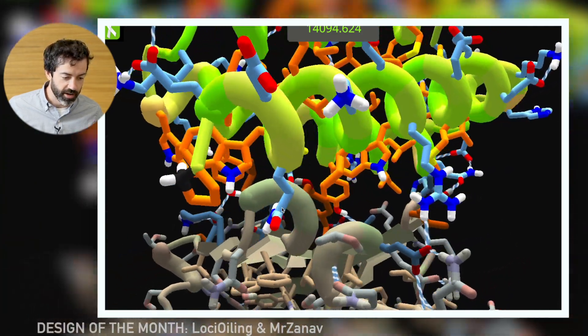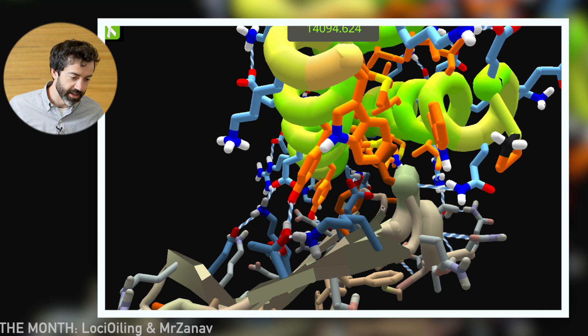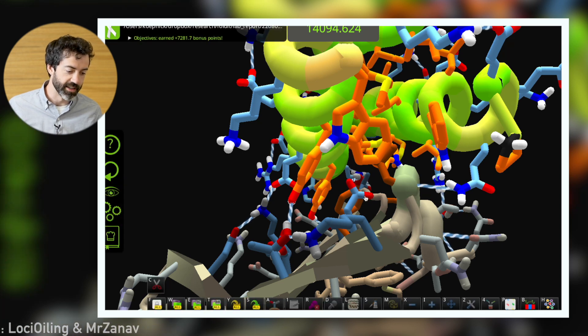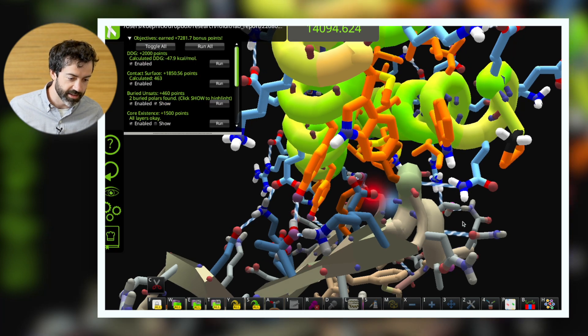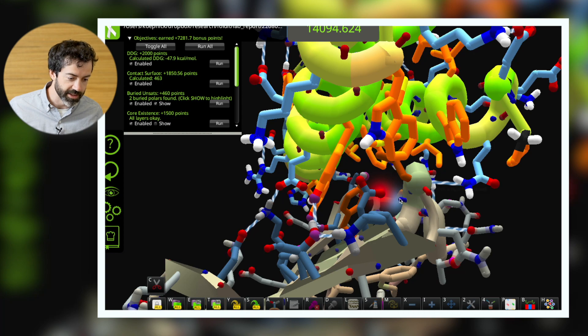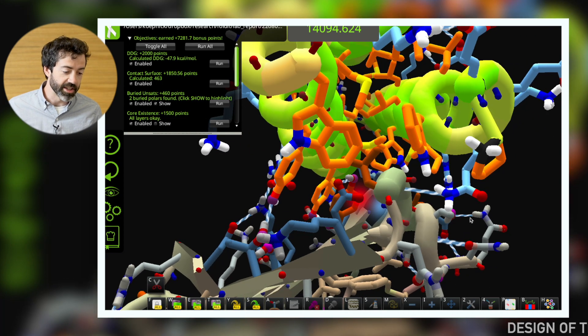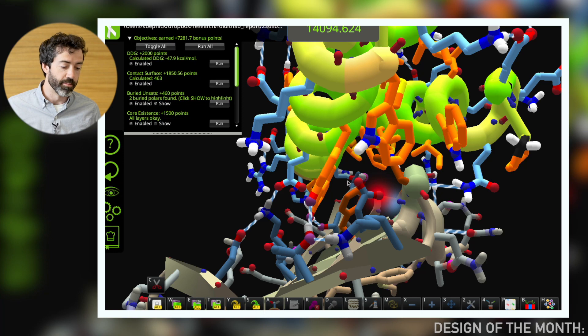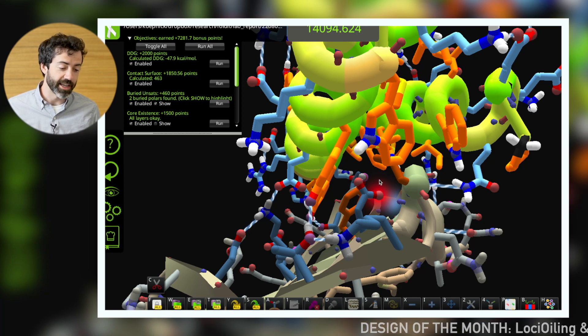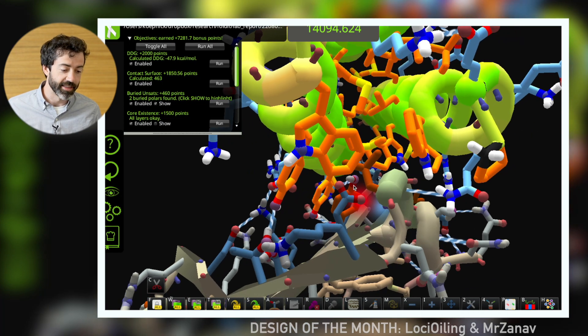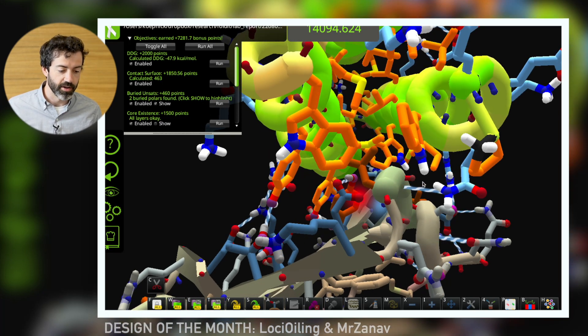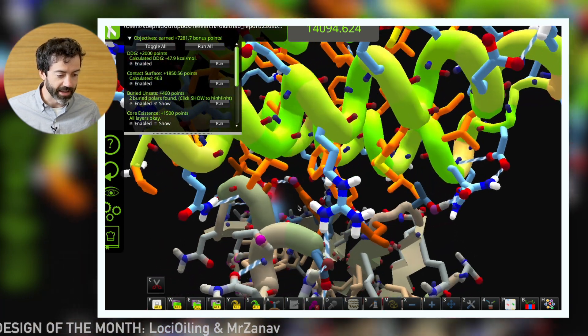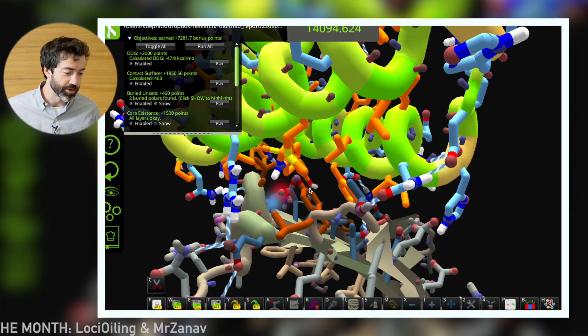There are a couple of polar atoms in the interior of the binding site that I'm a little bit worried about. We can check our buns objective and we see that it does flag a couple of these atoms here. So this is something to be careful of. Whenever we have buns, buried unsatisfied polar atoms at the interface, that can prevent binding. So this could be a little bit worrisome, although there's enough good hydrophobic packing otherwise that it might be able to cancel it out.